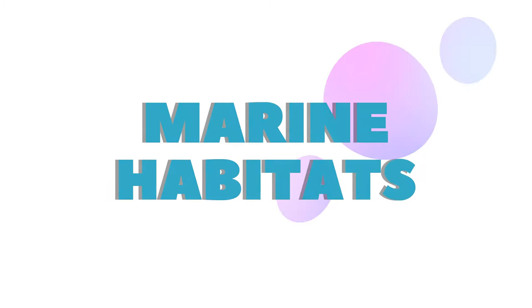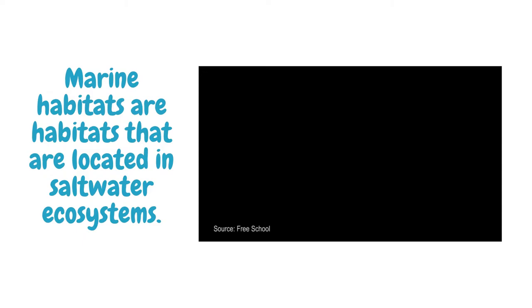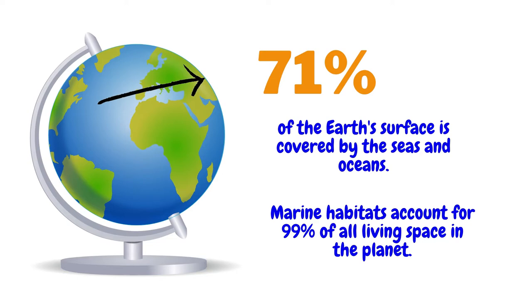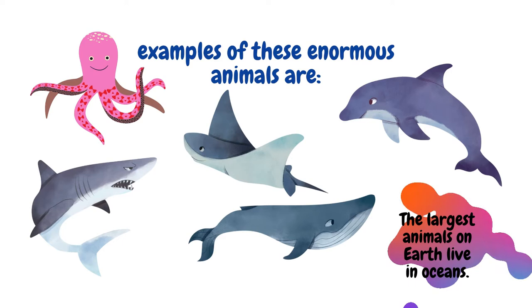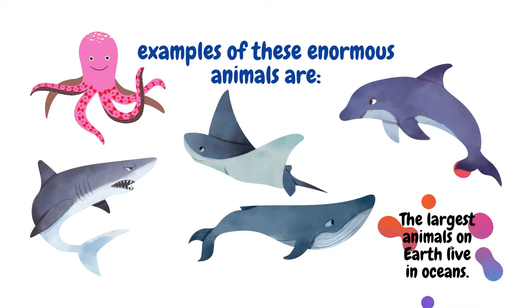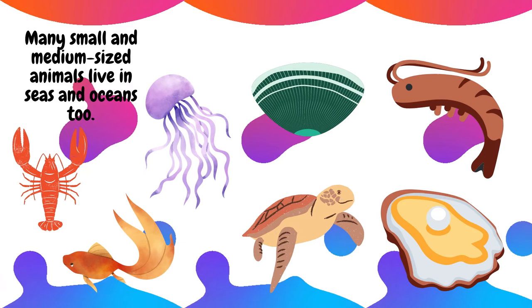Marine habitats are habitats that are located in saltwater ecosystems. Approximately 71% of the earth's surface is covered by the seas and oceans, so marine habitats constitute a large volume of habitat space for earth's living organisms. In fact, scientists estimate that marine habitats account for 99% of all living space on the planet today. Many of the largest animals on earth live in oceans because it is easier for very large animals to swim in saltwater than to walk on land. Examples of these enormous animals are whales, dolphins, sharks, colossal squids, giant octopi, and large marine fishes. Of course, many small and medium-sized animals live in seas and oceans too.